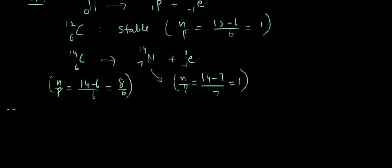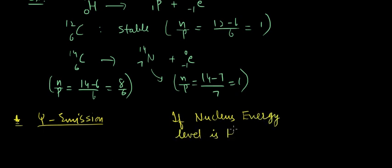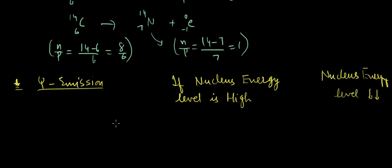Next let us see gamma emission. Gamma emission takes place because of a high nuclear energy level — the condition is that the nucleus energy level is high. The effect is that the nucleus energy level decreases. So atom X with atomic number Z and mass A disintegrates into X(Z, A) plus a gamma particle.